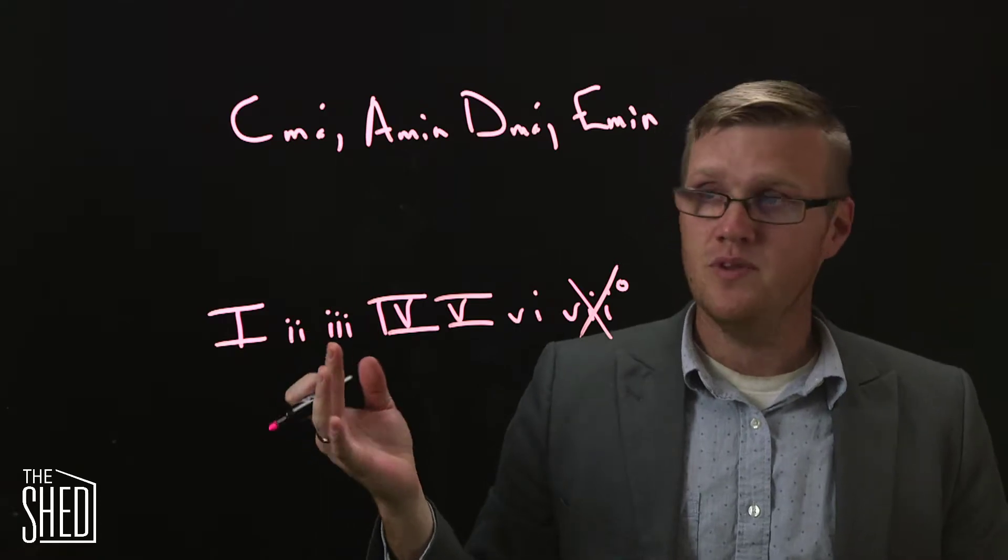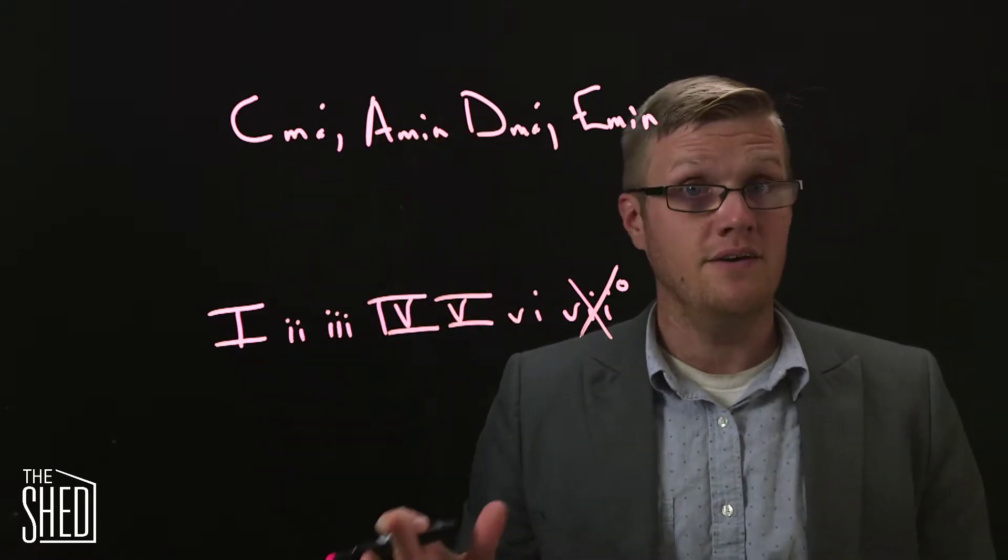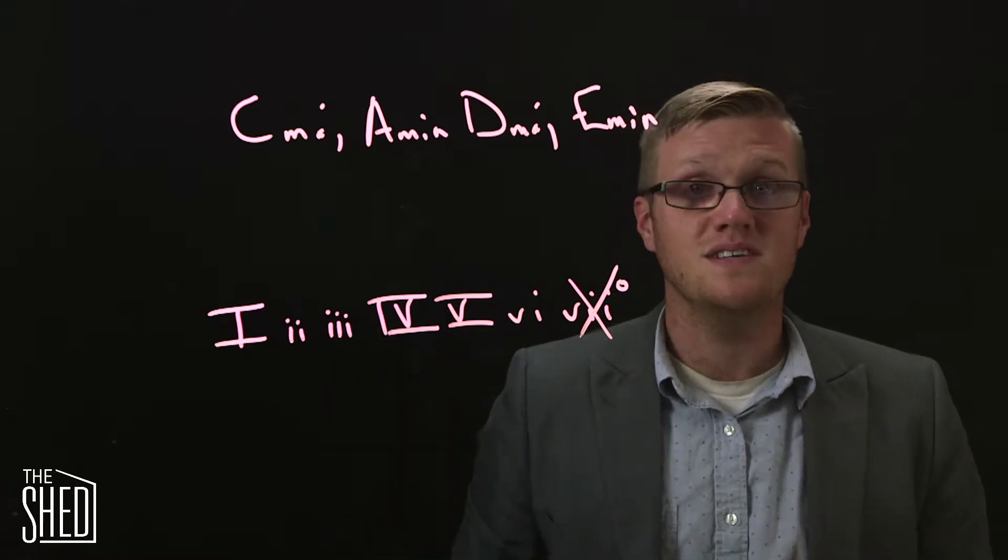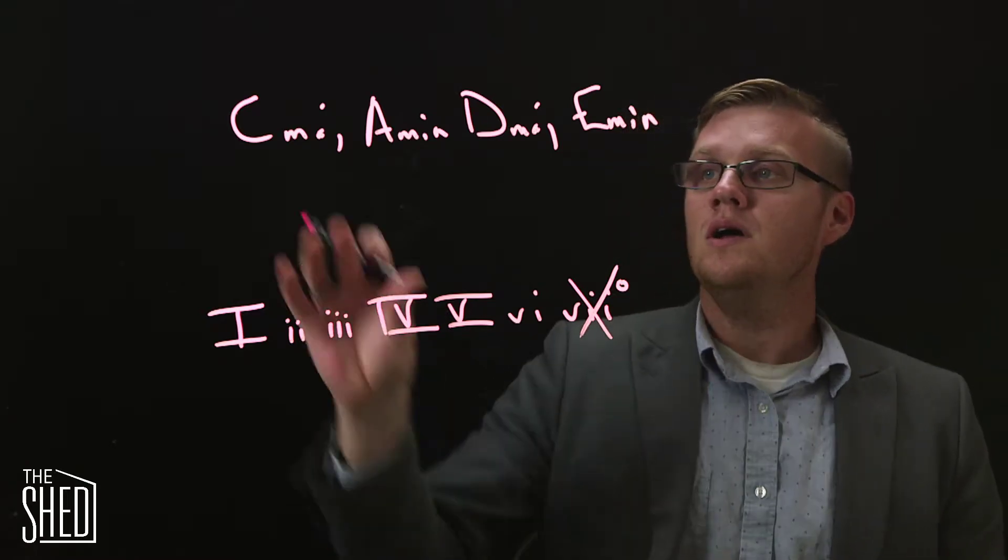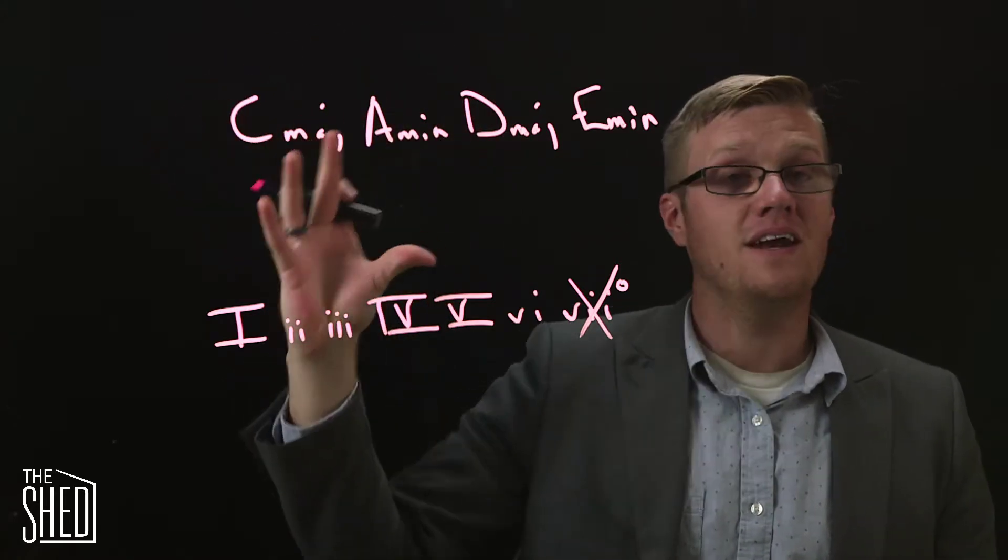There are some clues though, and the clues have to do with the chord qualities. So we have two minor chords that are next to each other, we have two major chords that are next to each other. So we can use that as a tool. Look at your chords up here. Do we have any minors and majors that are next to each other?